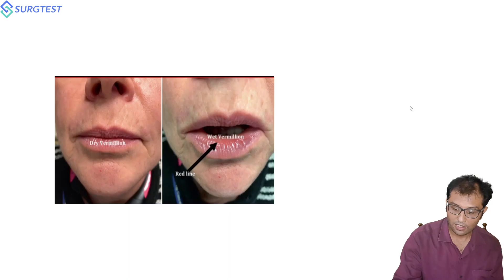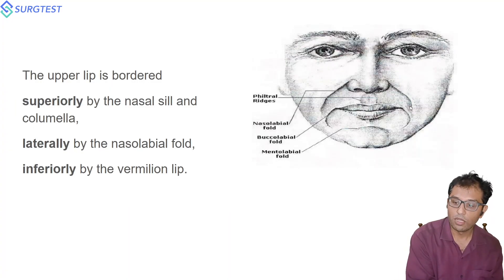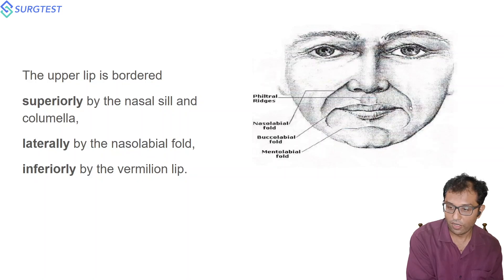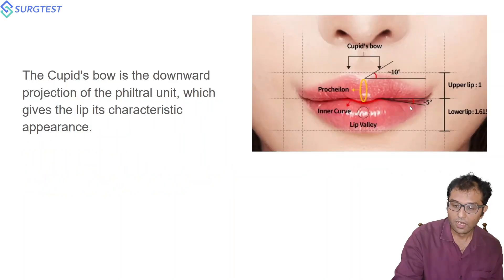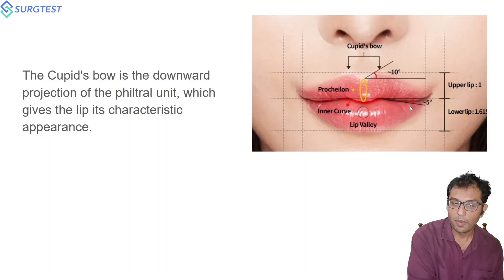The upper lip boundaries are not limited to the vermilion area. It is bounded superiorly by the nasal sill and columella, laterally by the nasolabial fold, and inferiorly by the vermilion lip. The lower lip is bordered superiorly by the lower vermilion lip, laterally by extensions of the nasolabial fold, and inferiorly by the mental crease. Cupid's bow is part of aesthetic reconstruction of the upper lip — it is a downward projection of the philtrum unit giving the lip its characteristic appearance.